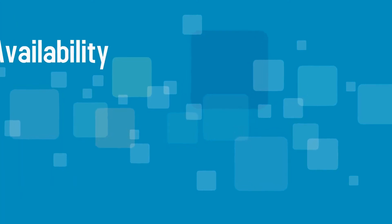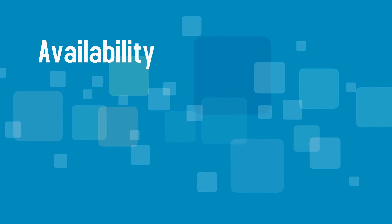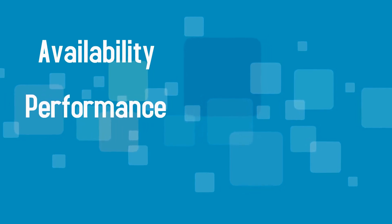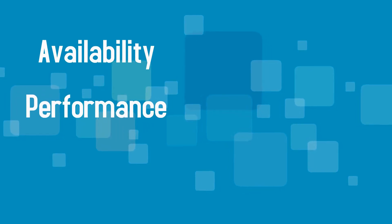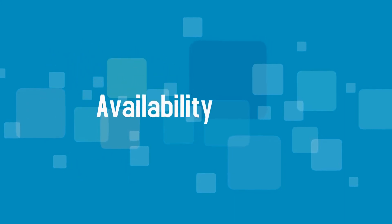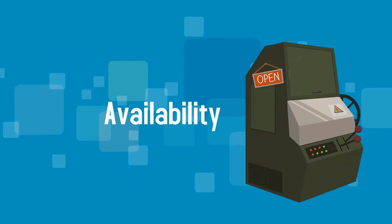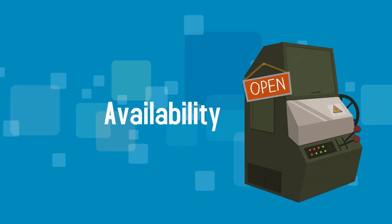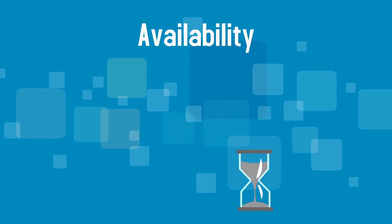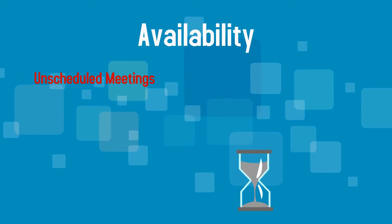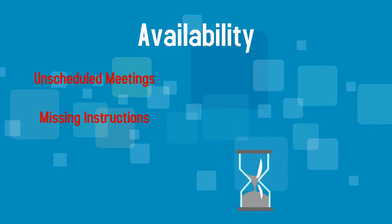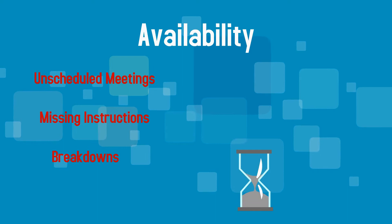OEE is broken up into three main categories: availability, performance, and quality. Availability refers to the time a machine or factory is available for operation. That available time can be quickly reduced by events such as unscheduled meetings and missing instructions.